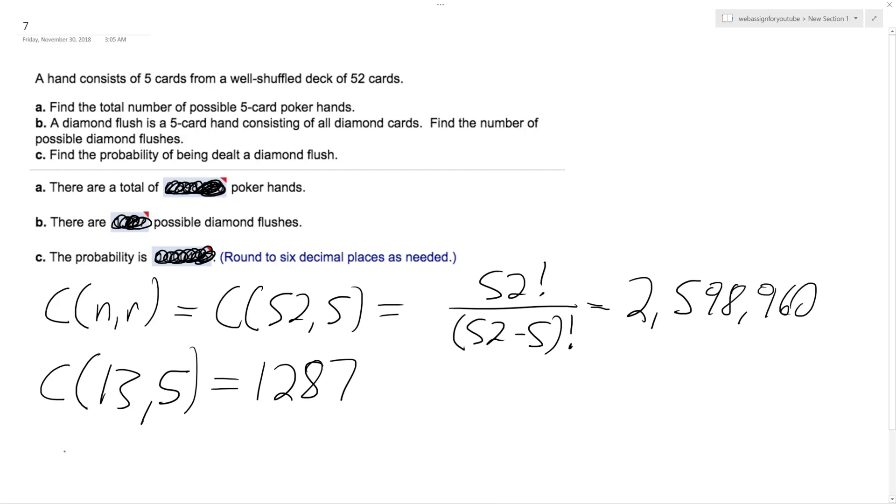So out of all these, we want to know the probability that you're going to be dealt that diamond flush. So it's just going to be one combination over the other. So in this instance, it ends up being, so this is part B is part A. So part C, it's going to be 1,287 over 2,598,960.